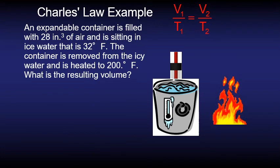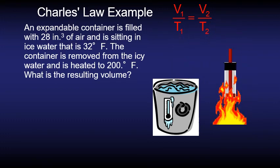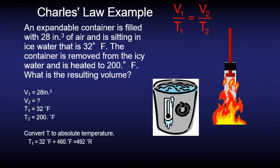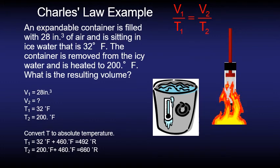We're going to look at a quick example here. If an expandable container is filled with 28 inches cubed of air and sitting in ice water that's at 32 degrees Fahrenheit, the container is then moved from the icy water and heated to 200 degrees Fahrenheit. What is the resulting volume? We have a bunch of givens and our missing piece of information is the resulting volume. But remember how when we're working with these temperatures in the perfect gas laws we need to convert them to absolutes. So those temperatures are in degrees Fahrenheit. So we add 460 to each of them and we end up with degrees Rankine.